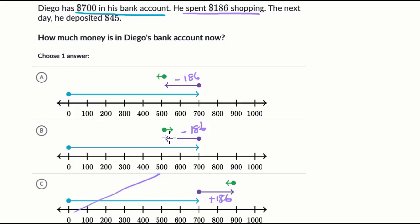And then after we subtract 186, this first choice is then, it looks like it's subtracting another amount. Maybe that's the 45 in green right over here. So maybe that's the 45. But if you're depositing $45, that should increase your bank account. So you shouldn't go down another 45. You shouldn't subtract 45. So I don't like this one.